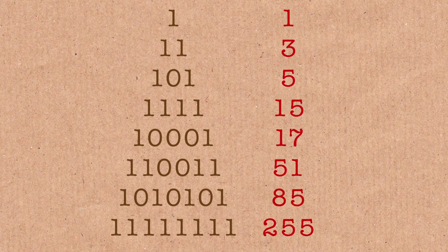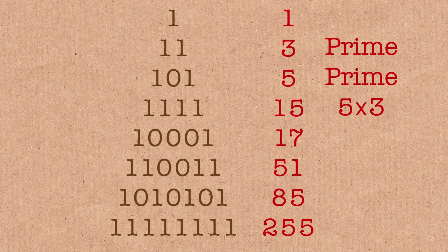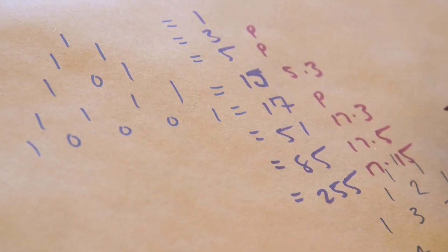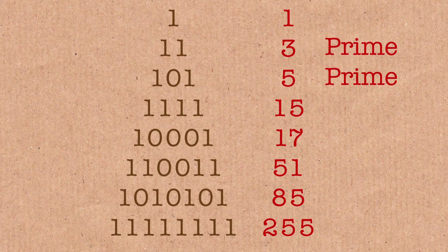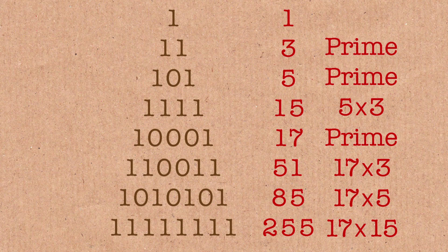And here I'm going to stop and I'm going to look at what these numbers are. Three is prime, five is prime, fifteen is five times three, seventeen is prime, fifty-one is seventeen times three, eighty-five is seventeen times five, and two fifty-five is seventeen times fifteen. So you'll notice that every time I get a prime I go back and I just multiply by all the things that came before and I can generate the next n minus one entries.